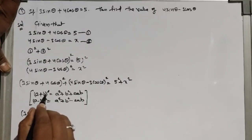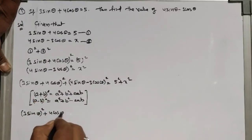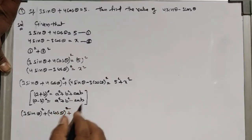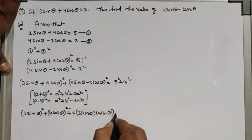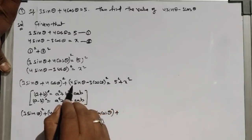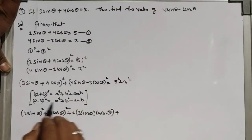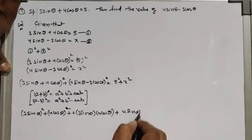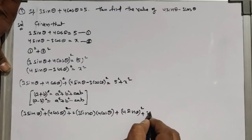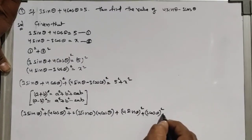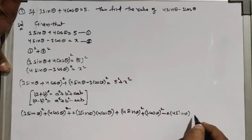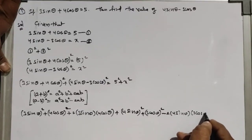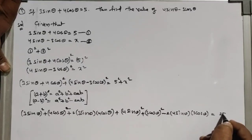Expanding: a² is (3sinθ)², b² is (4cosθ)², and 2ab is 2·3sinθ·4cosθ. For the second term: (4sinθ)² + (3cosθ)² - 2·4sinθ·3cosθ. So we get 9sin²θ + 16cos²θ + 24sinθcosθ, plus 16sin²θ + 9cos²θ - 24sinθcosθ, equal to 25 + x².